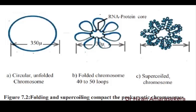The audio also mentions plasmids — those little circular DNA molecules floating around in the cytoplasm of bacteria. They undergo coiling and supercoiling too, adding another level of complexity. It's amazing how much is going on even in these simple cells.